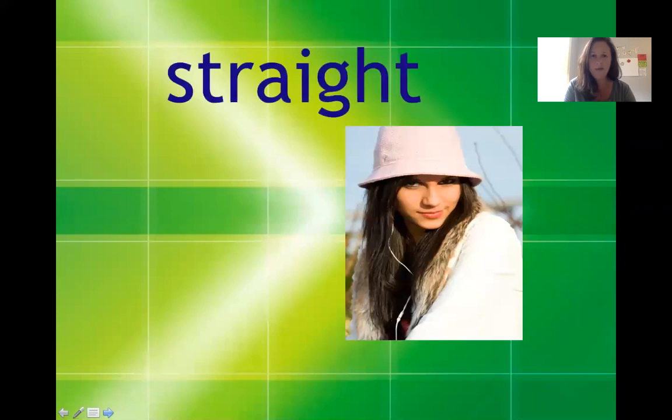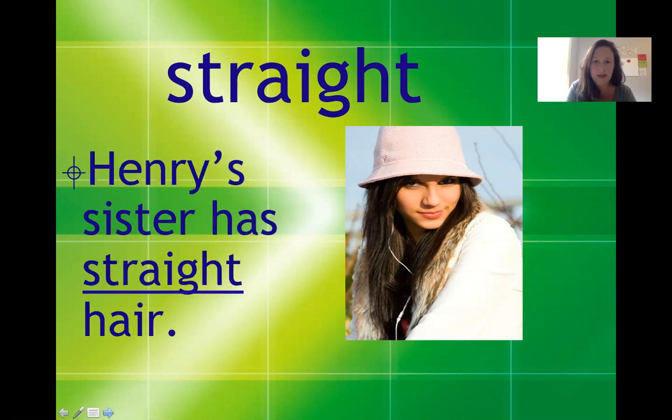Our second vocabulary word is straight and here you could see a picture of her straight hair. It says Henry's sister has straight hair. If you look at the picture clues and the sentence we know that straight hair is no curves, turns, and no bends so it's nice and straight.